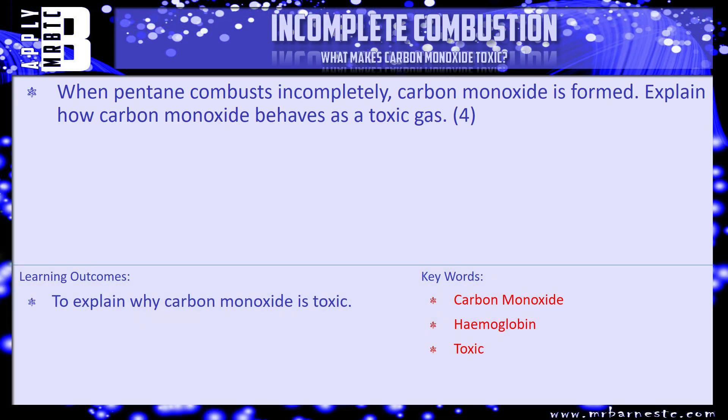So what can the examiner ask you on this? Here's an example question: when pentane combusts incompletely, carbon monoxide is formed — explain how carbon monoxide behaves as a toxic gas. It's worth four marks, so think through step by step what makes it toxic and dangerous. Pause the video, have a go, and we'll see how you've done in a minute.